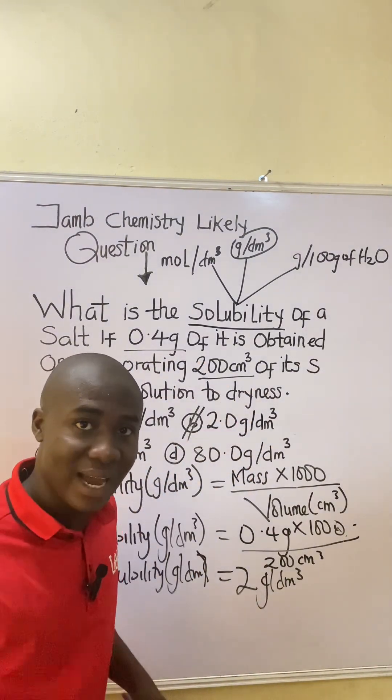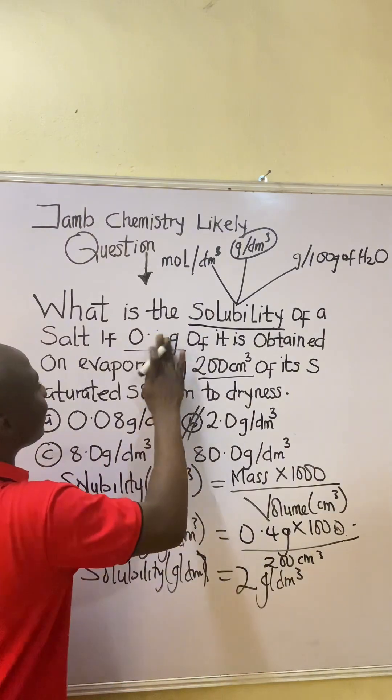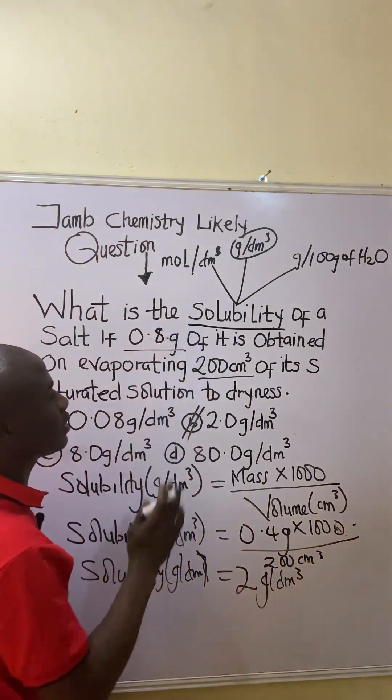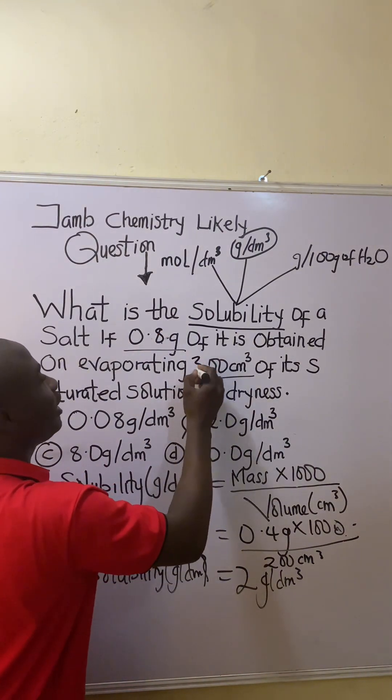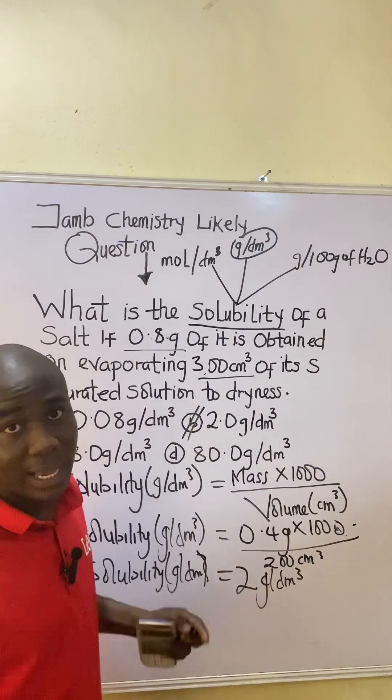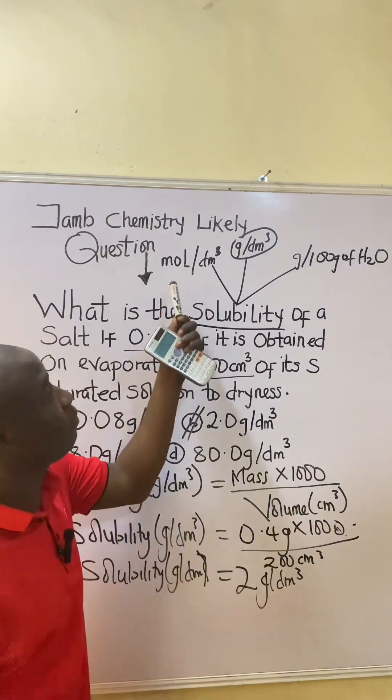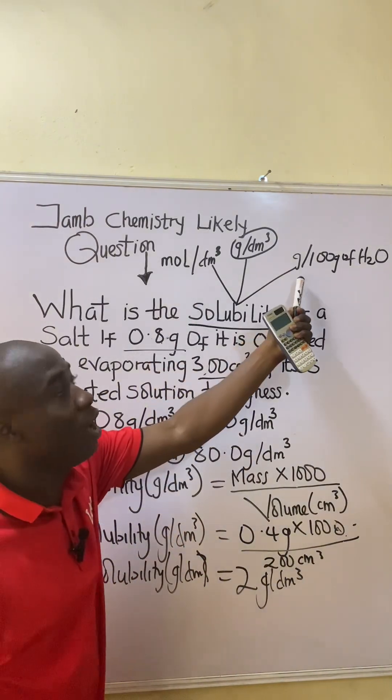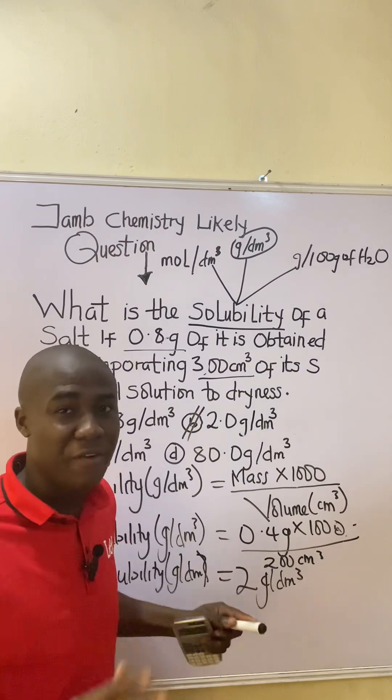So what you do for me: I'm going to change the values in this question so you solve and provide the answer in the comment section. Here will be 0.8 grams and here will be 300 cm³. So solve for the solubility in grams per dm³. We have other formulas for solving in moles per dm³ and also grams per 100 grams of water.